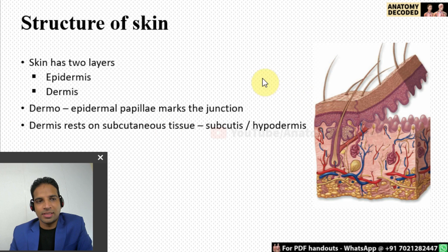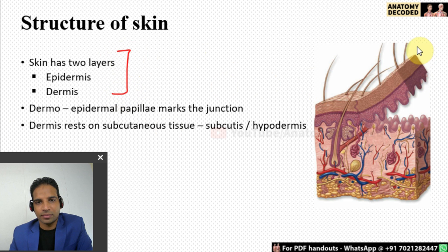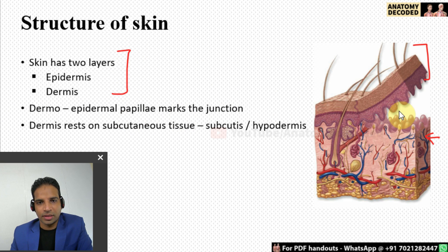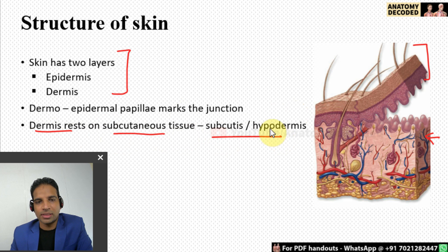Let's start with the skin. In general the skin has two layers: the epidermis and the dermis. Here we can see the epidermis part is reflected and this region is the dermis. Dermo-epidermal papillae mark the junction — the projections from the dermis are referred to as the papillae. The dermis rests along a subcutaneous tissue referred to as the hypodermis.